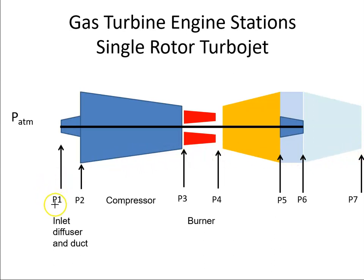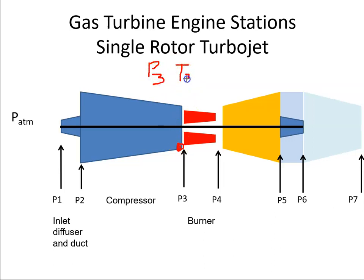P is for pressure, so P3 means the pressure at that station. Generally when we refer to the stations it's either P or T. So P3 is the pressure at that point, and T3 is the temperature of the air at that point. So P2.5 is the pressure at that point and T2.5 would be the temperature at that point.